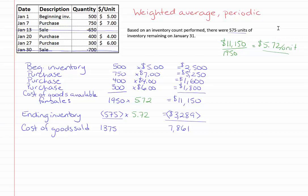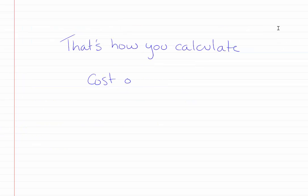So now that you've watched this video you should be able to calculate cost of goods sold using the weighted average method under the periodic inventory system.